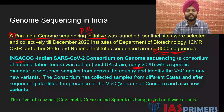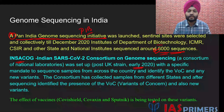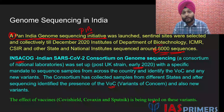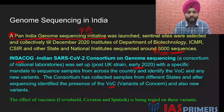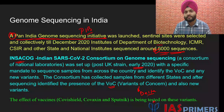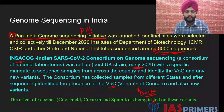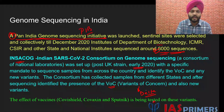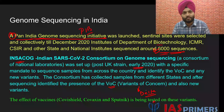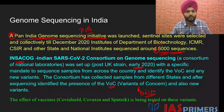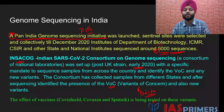INSACOG has collected samples from different states and identified the presence of variants of concern as well as new variants. The variant of concern identified here is particularly the Delta variant. It identified this variant and tested it against the various vaccines to see how they respond.